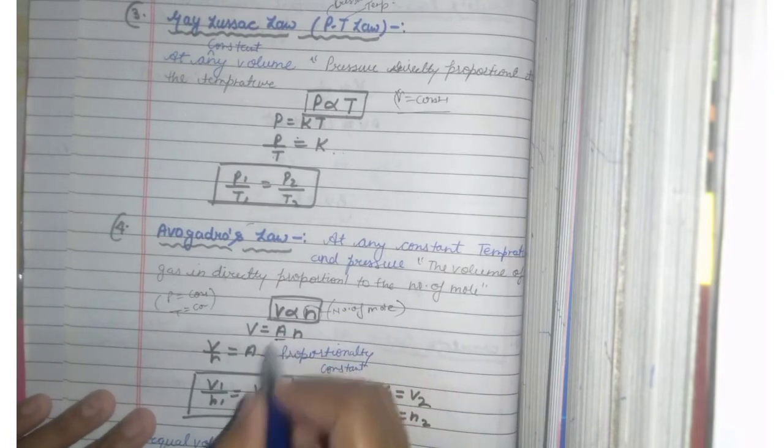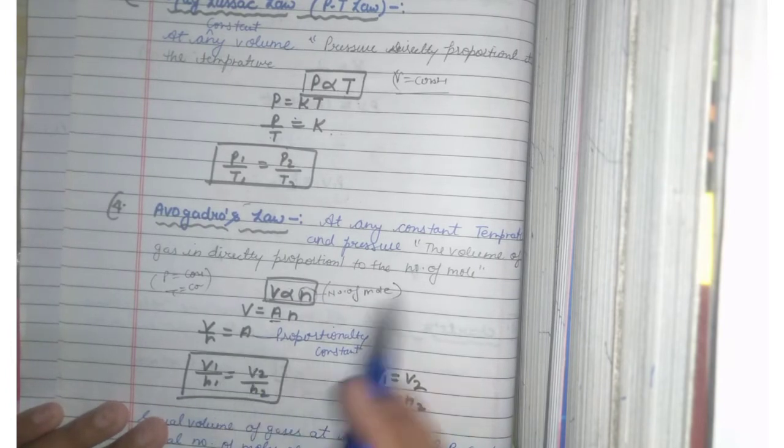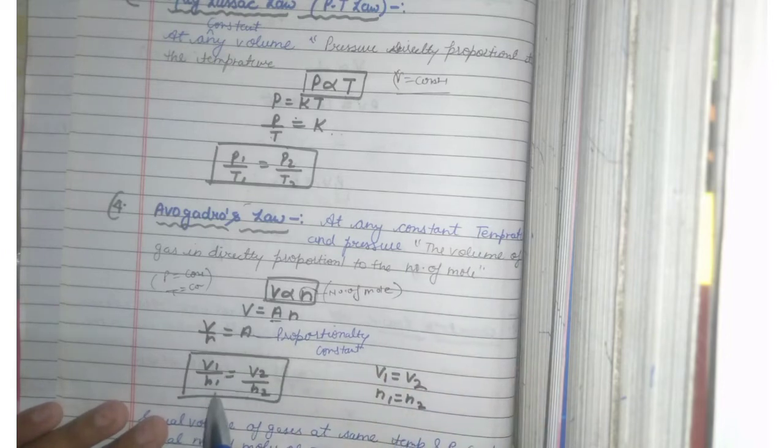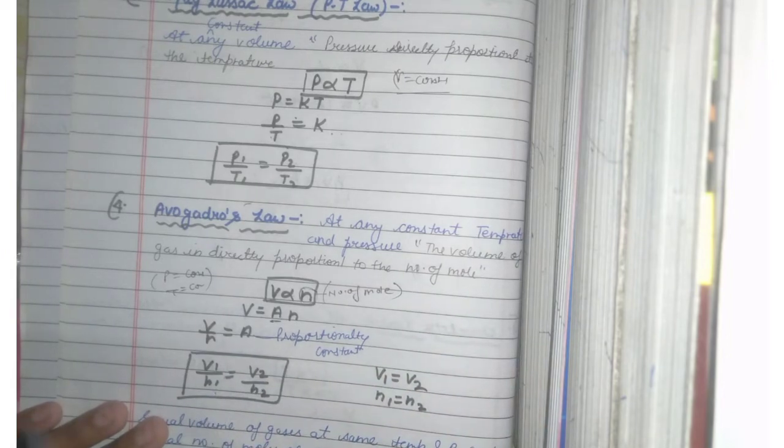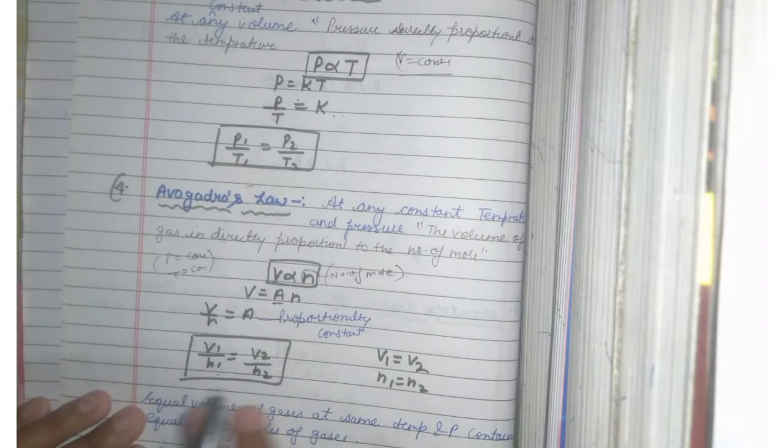This N represents number of moles. V is equal to A, which is a proportionality constant. And if you talk about two volume and two number of moles, then V1 over N1 is equal to V2 over N2.